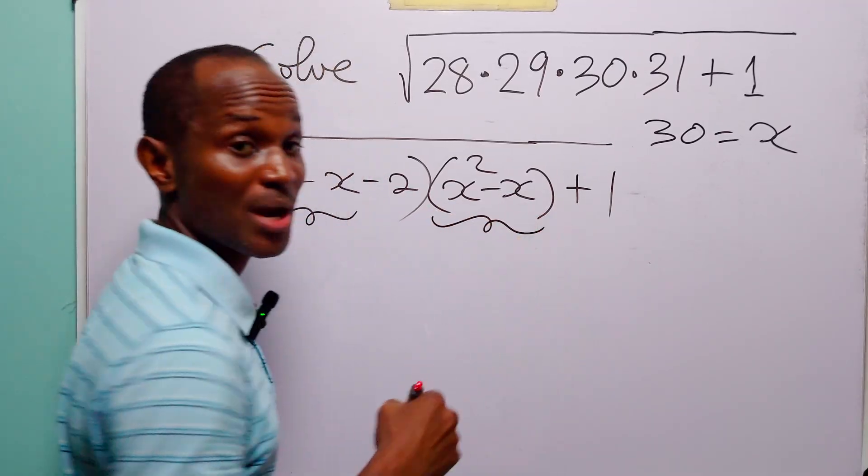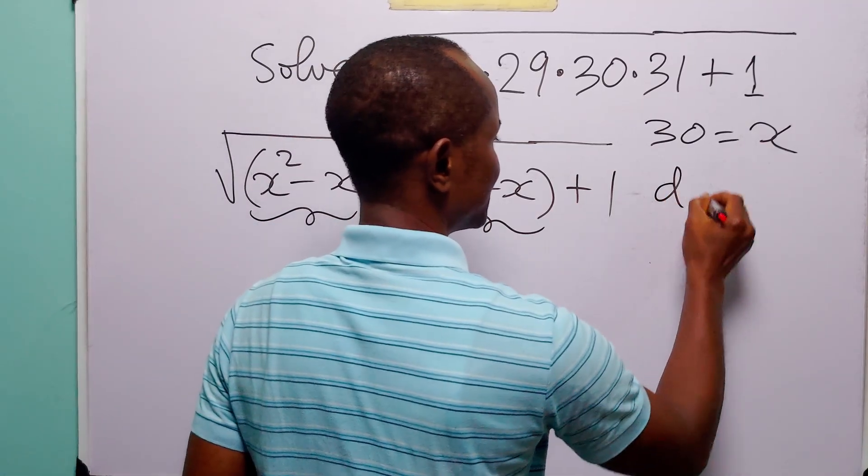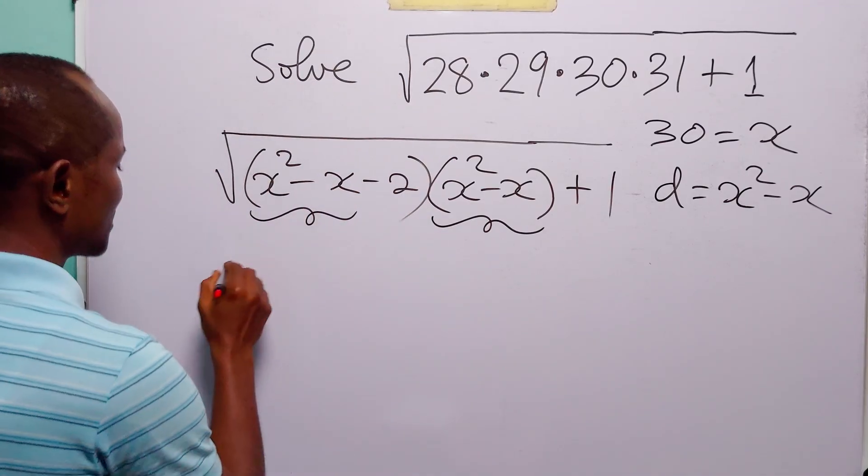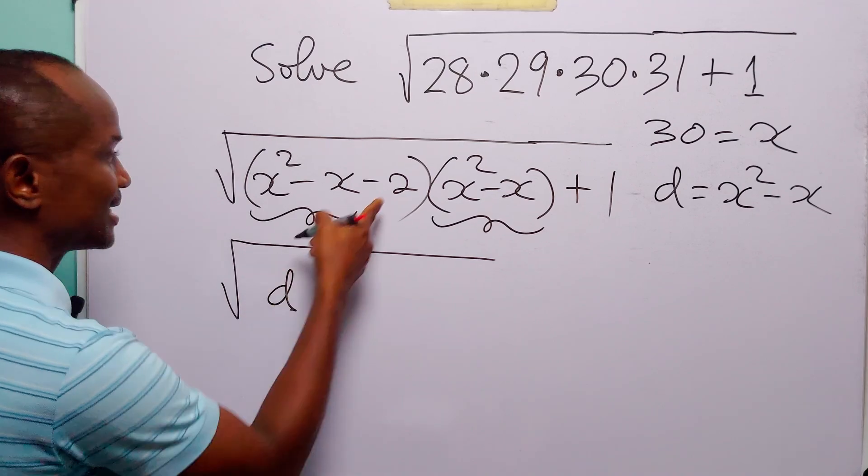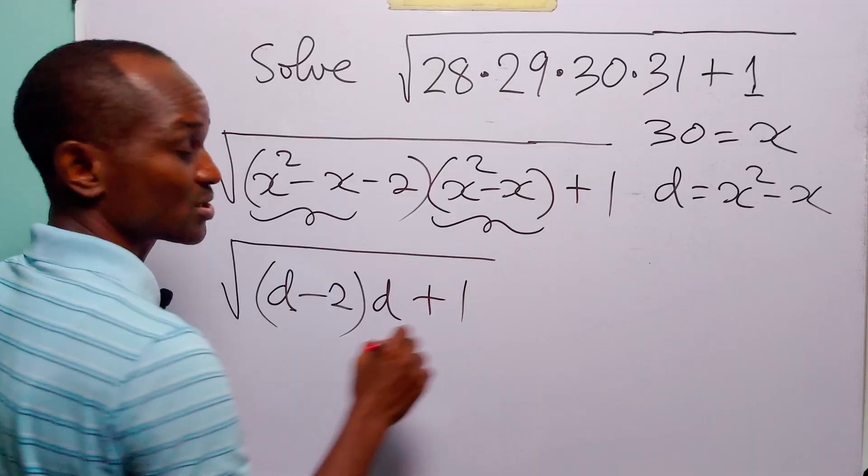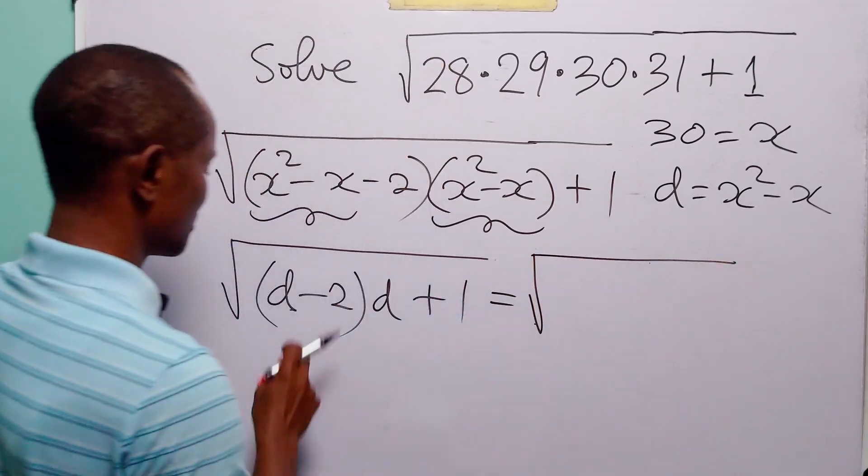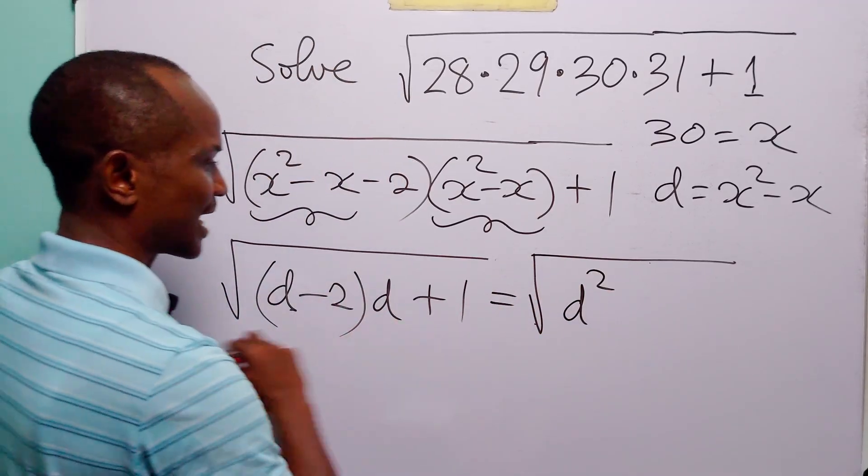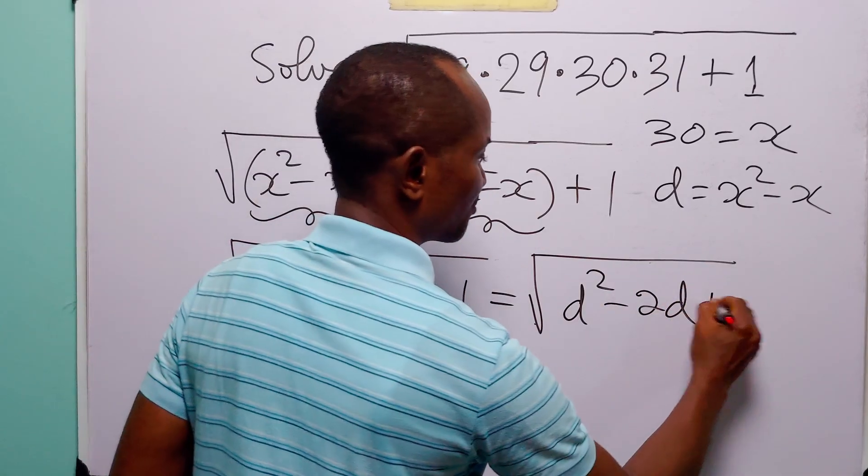So let us do another substitution. Let d be equal to x squared minus x. So that this square root is now going to be, here we have d minus 2 multiplied by d plus 1. Now this is going to be equal to d times d is d squared. Minus 2 times d is minus 2d. And then we have plus 1.